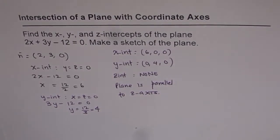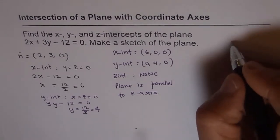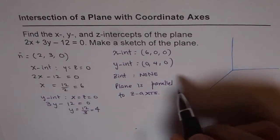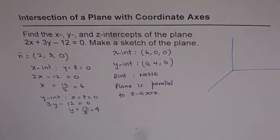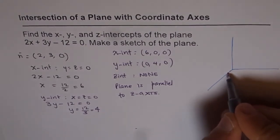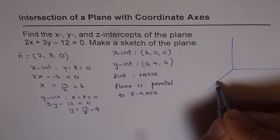So let's try to sketch this plane now. That is our x, y, z coordinates and let's find where the x-intercept is. The x-intercept is (6, 0, 0). That means 1, 2, 3, 4, 5, 6. That's the point.